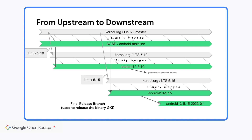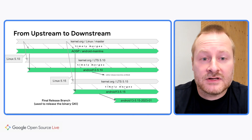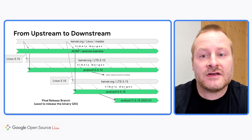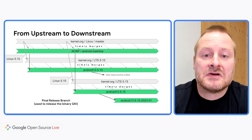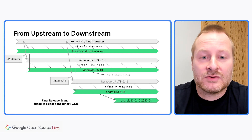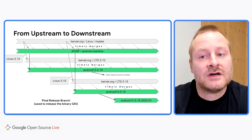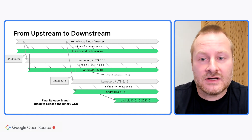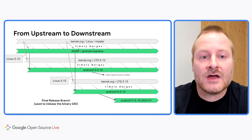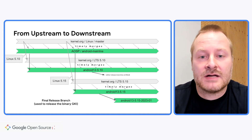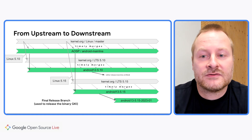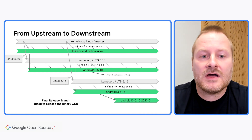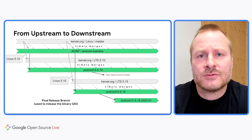For example, when 5.10 was created and that release merged into Android mainline, we forked Android 12 5.10 away. Similarly with 5.15, which forked into Android 13 5.15. After that, those branches receive timely merges from the LTS release cut at the same time — timely meaning we expect an LTS release of every branch roughly once a week, and a couple days later we have it incorporated in our branches. Eventually, after stabilization and possibly some more feature development, a release branch is cut, and that branch is used to build the binary that ends up on every device.